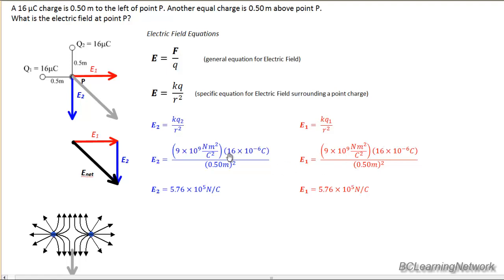Q1 and Q2, doesn't matter which side, are both 16 microcoulombs. So 16 times 10 to the negative 6. And the distance is 0.5, so we go 0.5 squared on the bottom. And E1 and E2 both end up becoming 5.76 times 10 to the fifth newtons per Coulomb.